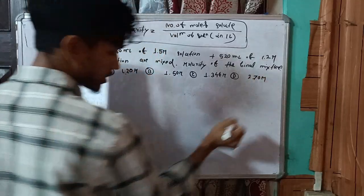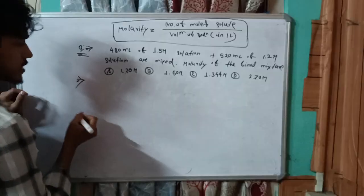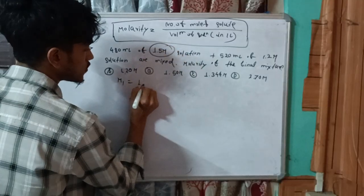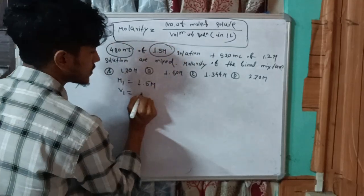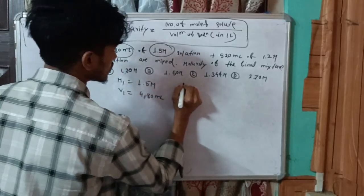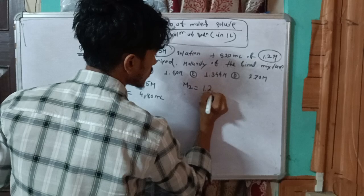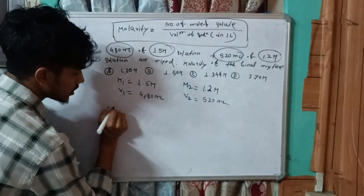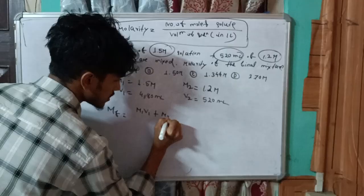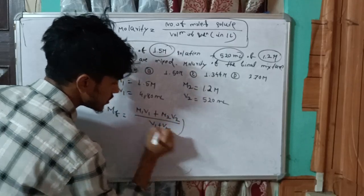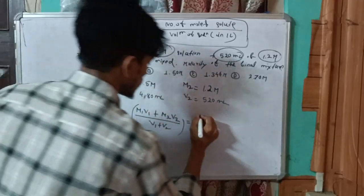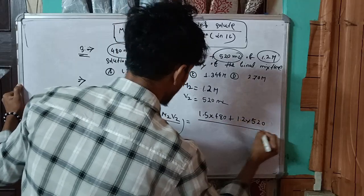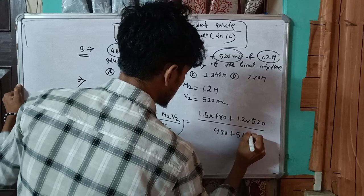We will use the mixing formula. Here M1 = 1.5 M, V1 = 480 mL, M2 = 1.2 M, V2 = 520 mL. The molarity of the mixture is (M1·V1 + M2·V2) divided by (V1 + V2). So: (1.5 × 480 + 1.2 × 520) divided by (480 + 520).